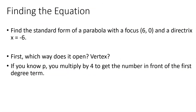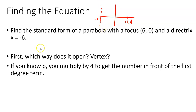How about this one: find the standard form of a parabola with a focus of (6, 0) and a directrix of x equals negative 6. The focus is at (6, 0) and the directrix is a vertical line at x equals negative 6. This gives us a couple of pieces of information. First, halfway between the focus and the directrix must be the vertex, so the vertex is at the origin.